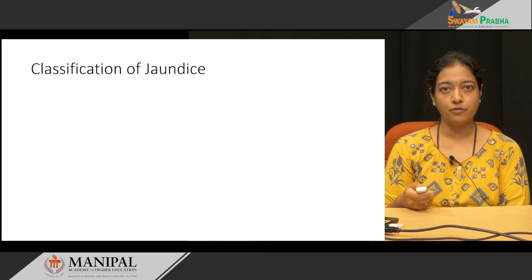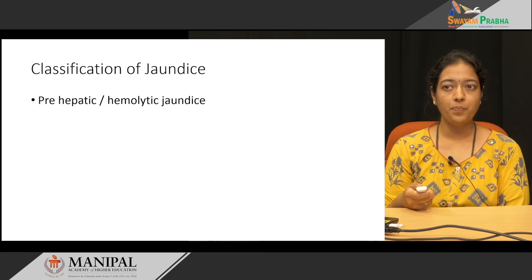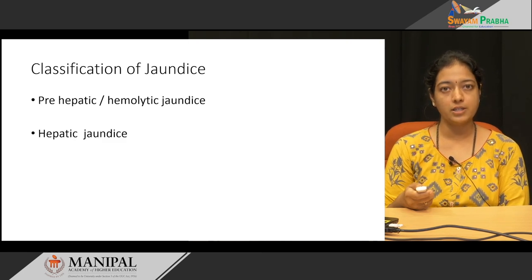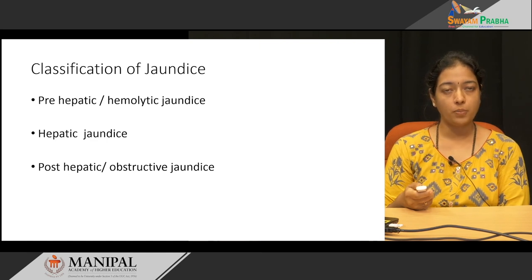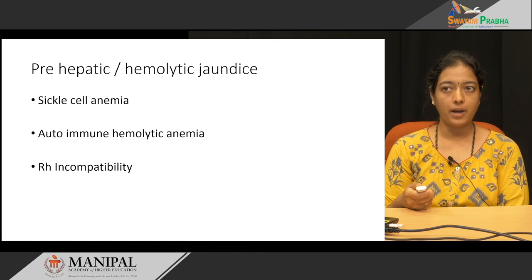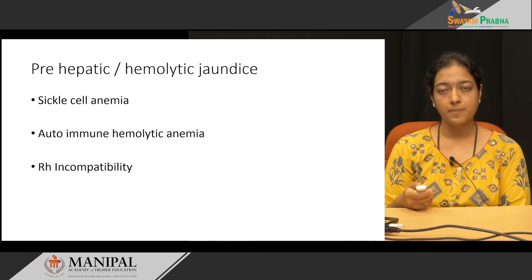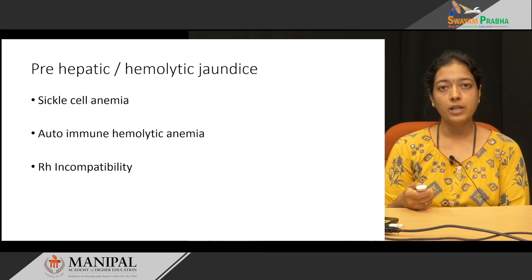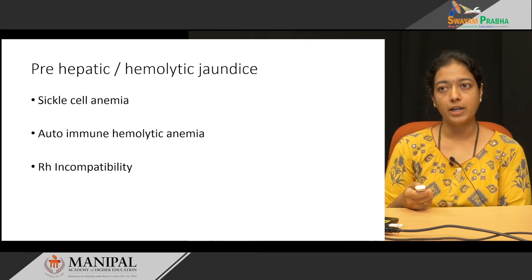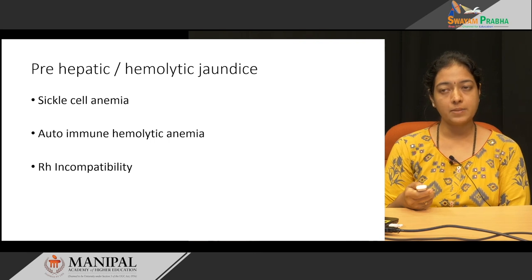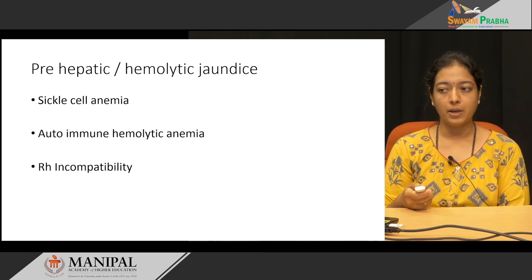Jaundice is broadly classified into pre-hepatic or hemolytic jaundice, hepatic jaundice, and post-hepatic or obstructive jaundice. Pre-hepatic jaundice is called hemolytic because the main cause is hemolysis. The causes for hemolysis may be sickle cell anemia, autoimmune hemolytic anemia, or RH incompatibility — all these can lead to pre-hepatic jaundice.